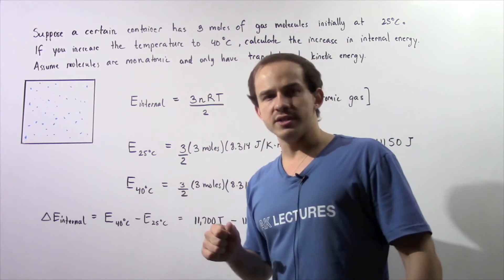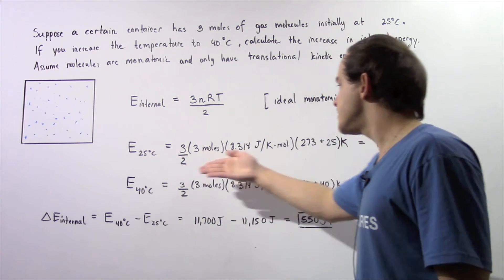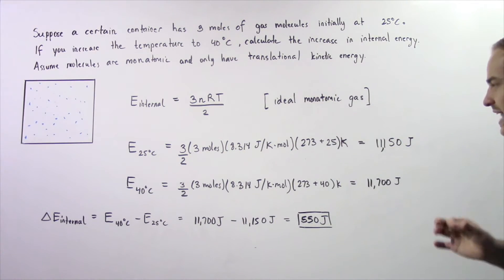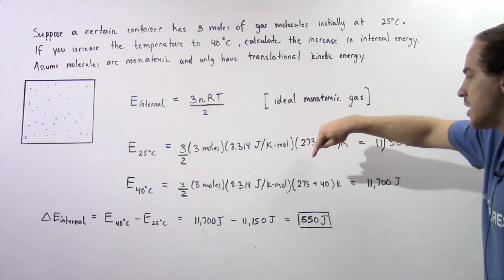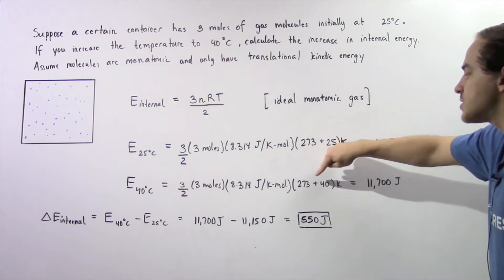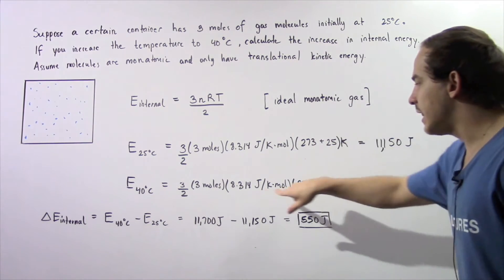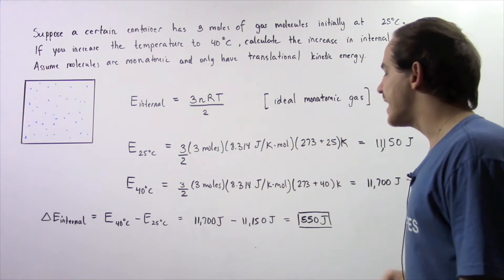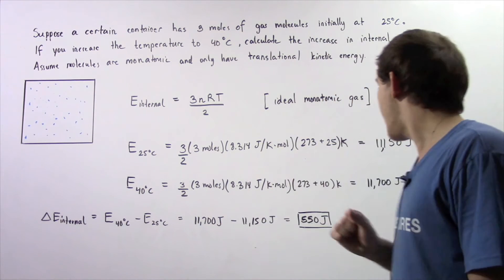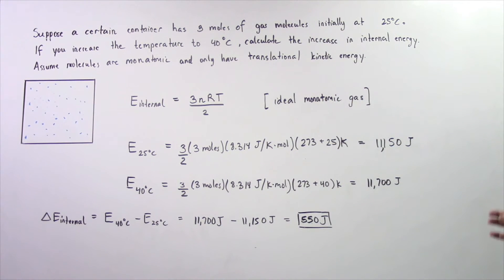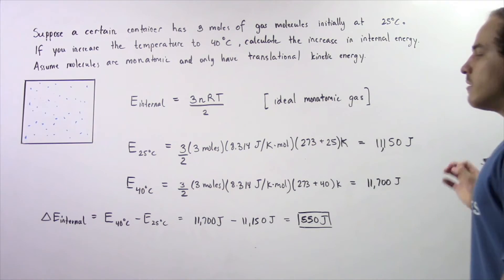What about at 40 degrees Celsius? So we follow the same exact procedure except now our Kelvins is 273 plus 40 degrees. So the Kelvins cancel, the moles will cancel, and we're left with about 11,700 joules of energy.